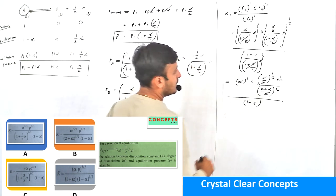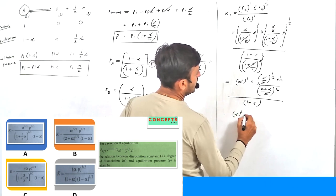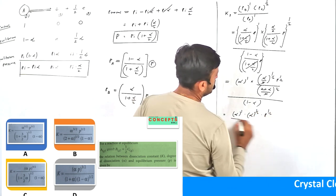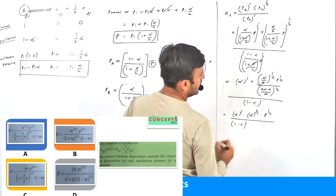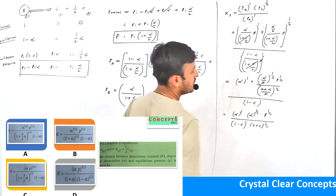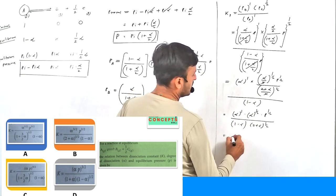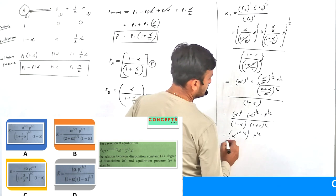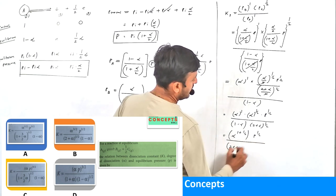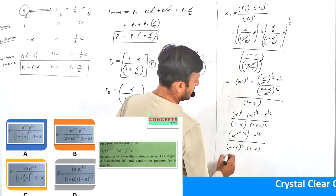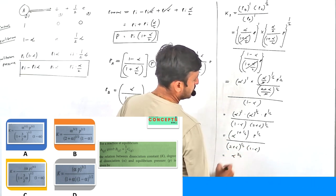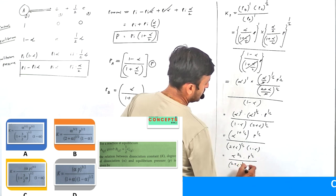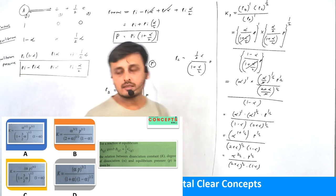Further simplifying: α raised to 1 × α raised to 1/2 × P raised to 1/2, divided by (1 - α) × (2 + α) raised to 1/2. Combining the alpha exponents gives α raised to (1 + 1/2) = α raised to 3/2. So KP = α^(3/2) × P^(1/2) / [(2 + α)^(1/2) × (1 - α)], and accordingly we can select our answer.